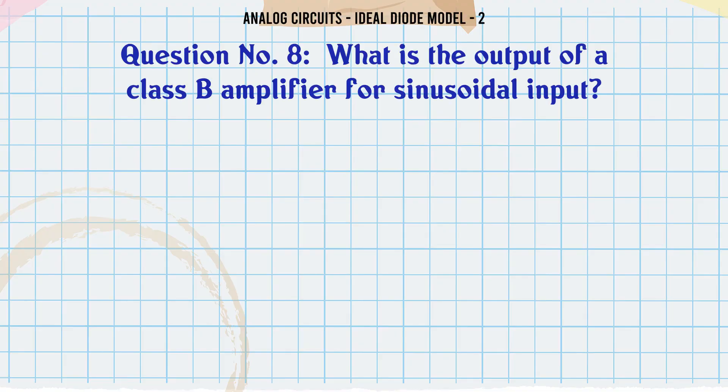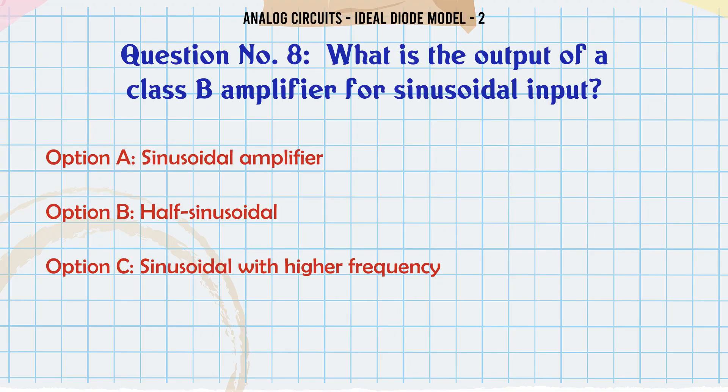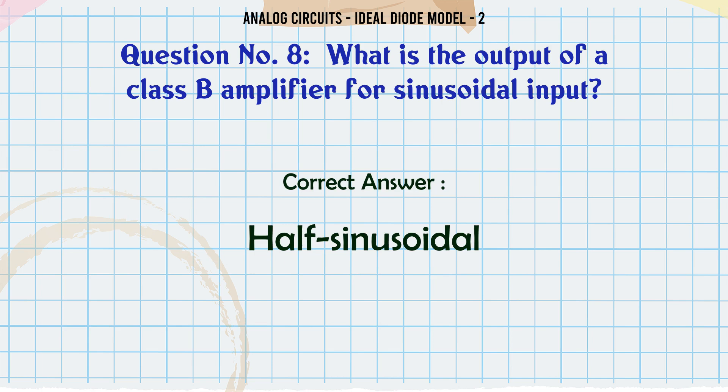What is the output of a class B amplifier for sinusoidal input? A) Sinusoidal, B) Half sinusoidal, C) Sinusoidal with higher frequency, D) Square wave. The correct answer is: Half sinusoidal.